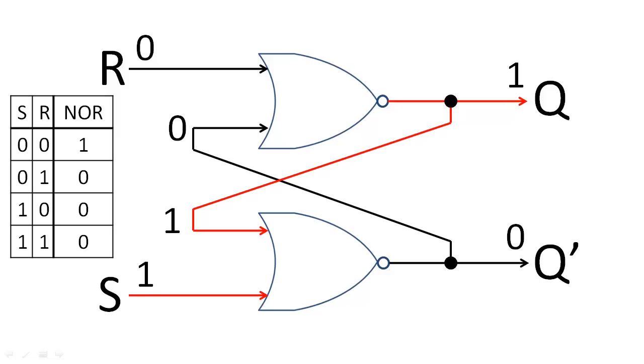Let's change S to 0. When both S and R are 0, both Q and Q prime will hold their values.